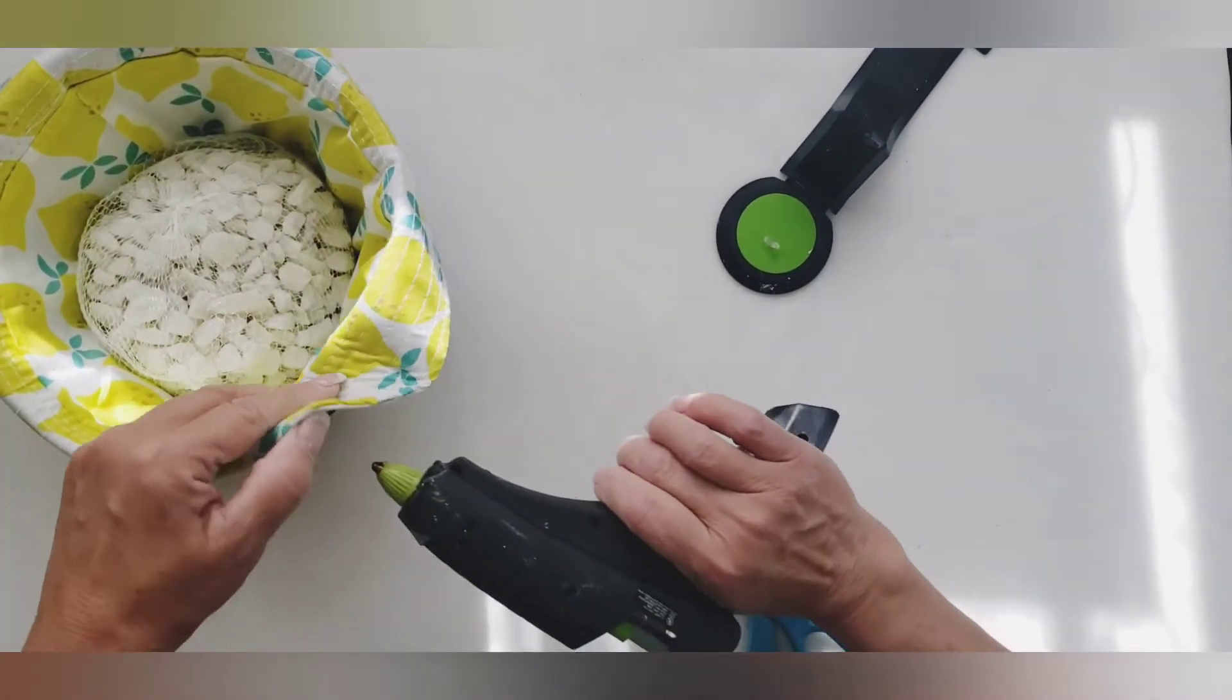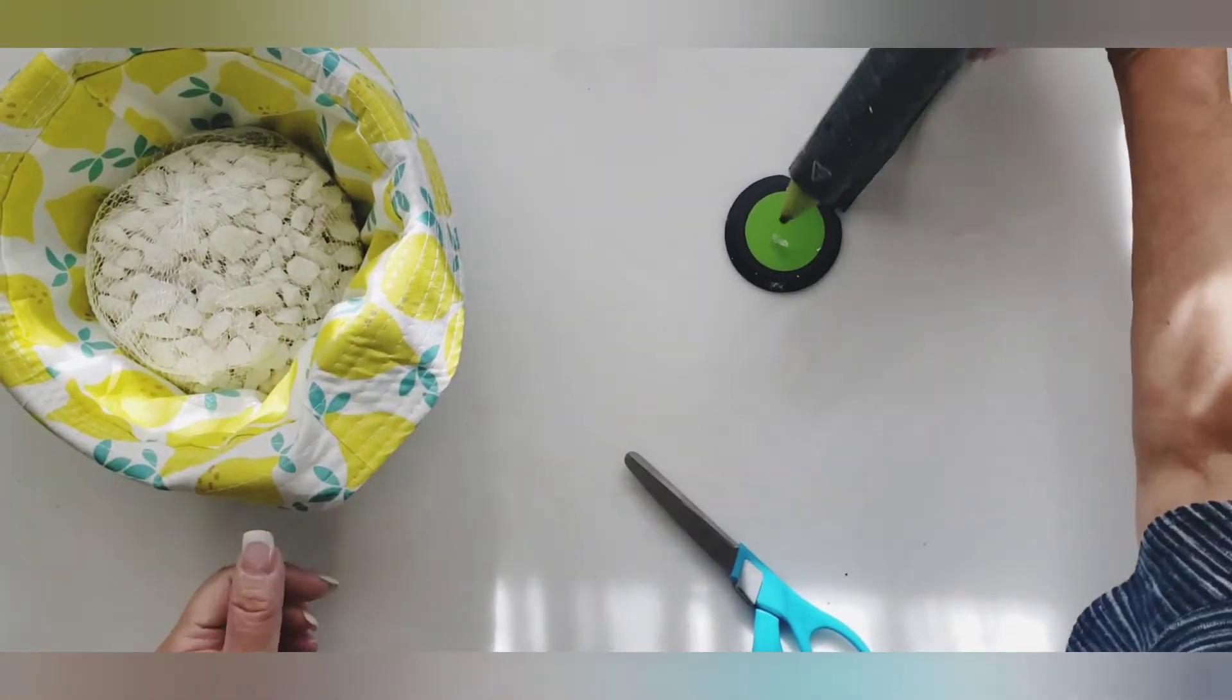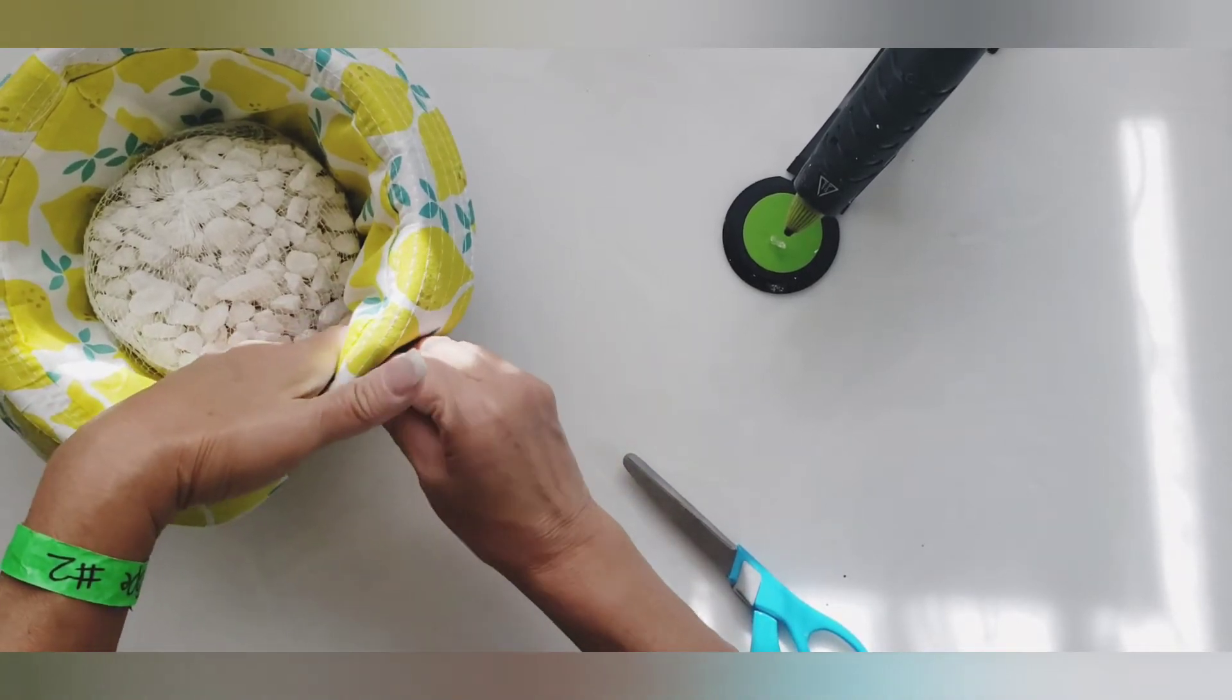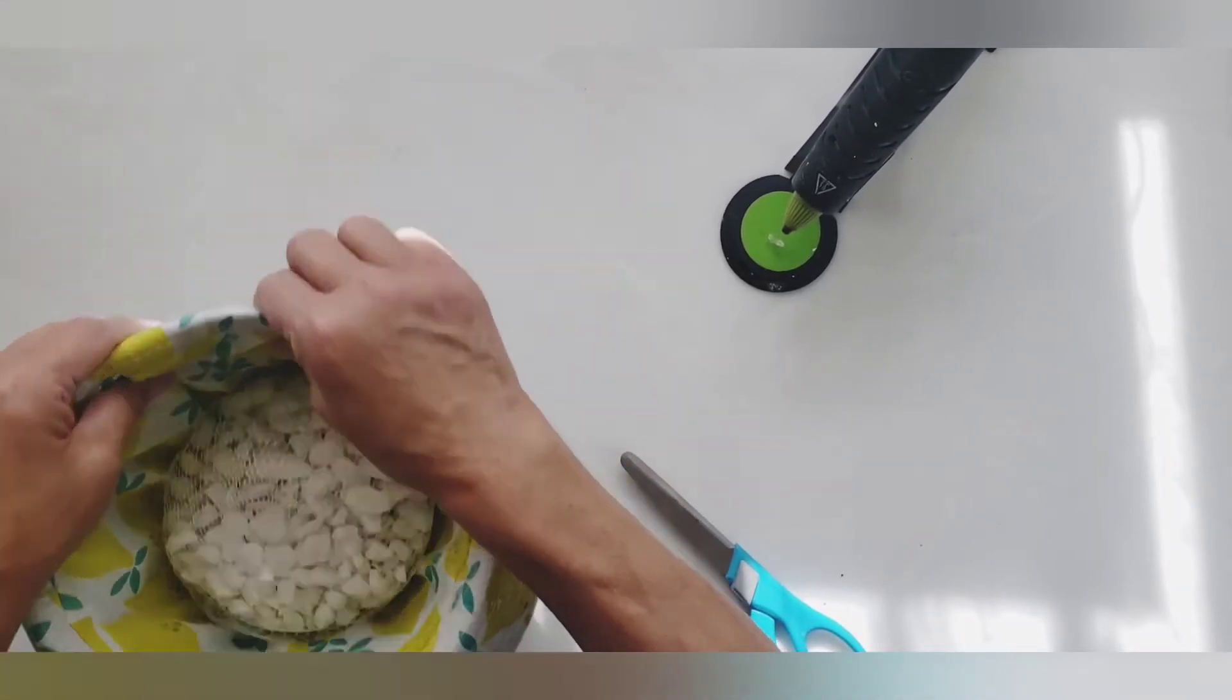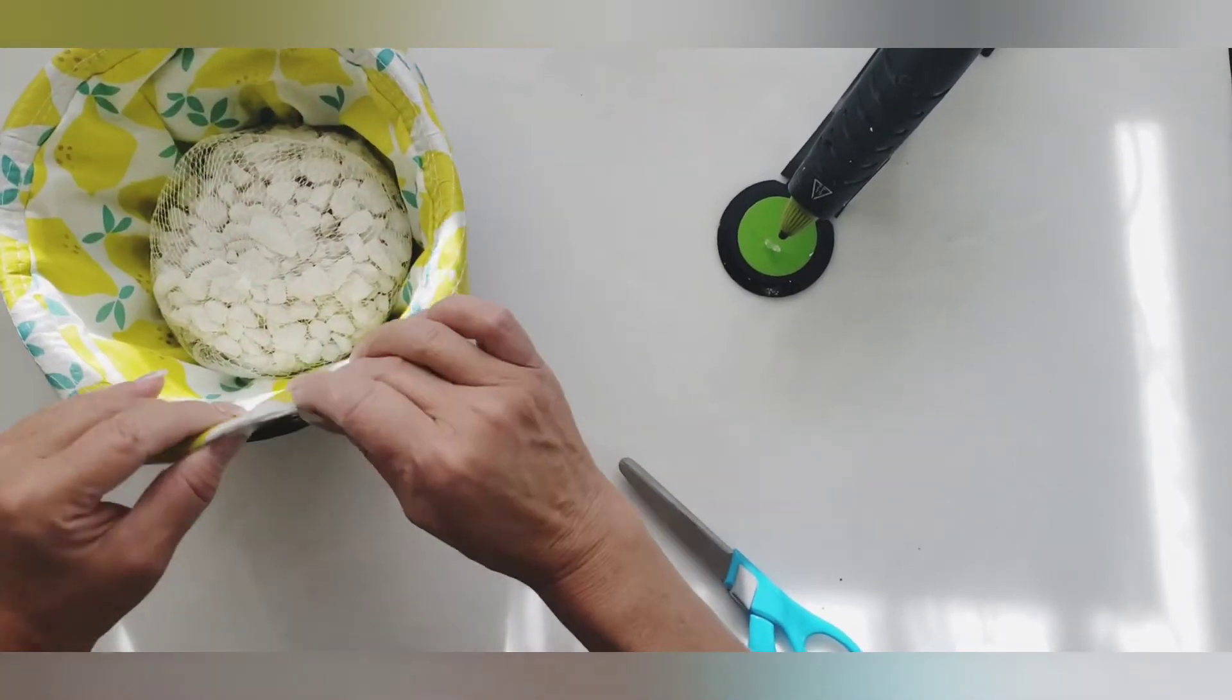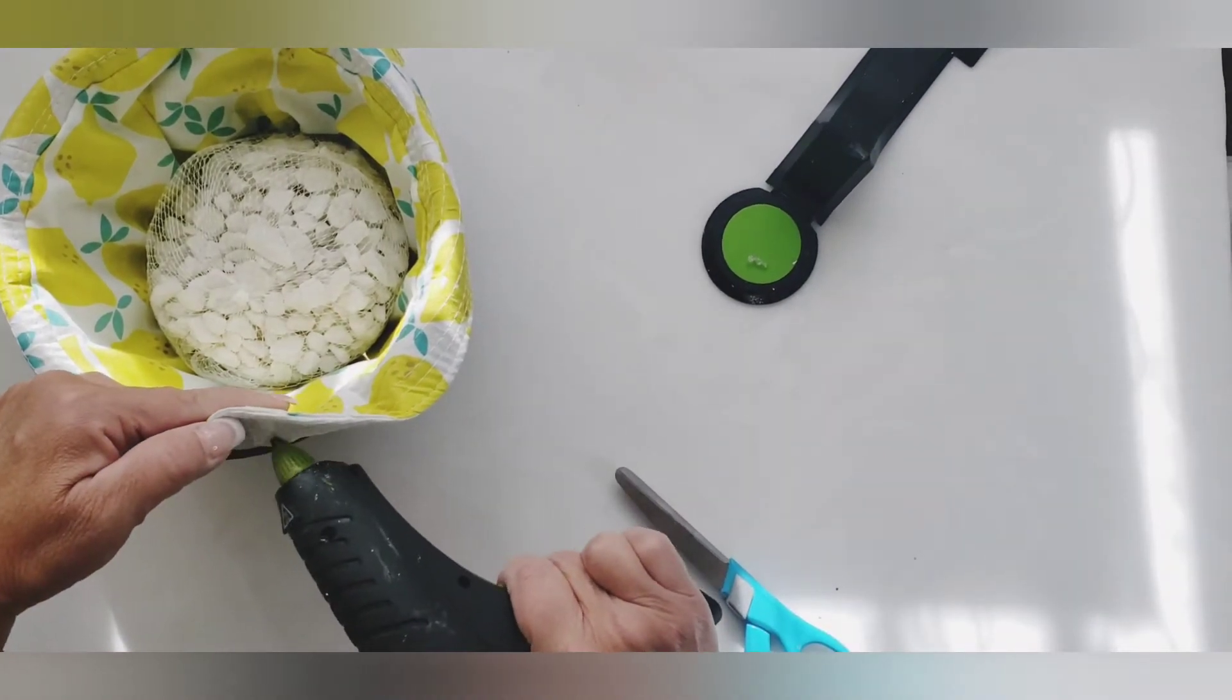So I'm going to take my hot glue and right at that first seam of the hat I'm going to tack it down there first and then I'm going to tack it down on the opposite end of the hat which is also a seam.